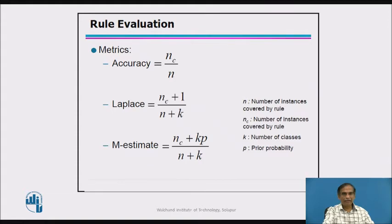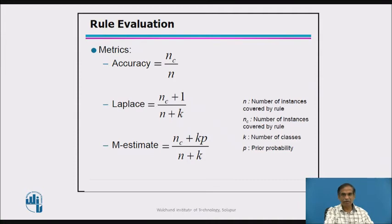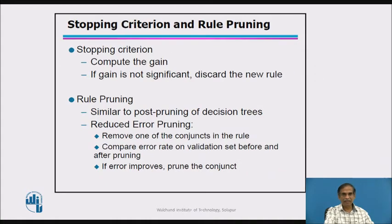Evaluation metrics are calculated using formulas where N is the number of instances covered by a rule, K is the number of classes, and P is the prior probability. Using these, accuracy, Laplace, and M-estimate metrics of the particular rules can be evaluated.